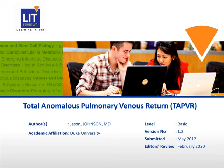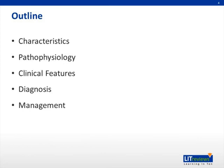I am Dr. Jason Johnson, one of the pediatric cardiology fellows at Duke University. This is a video annotated PowerPoint on total anomalous pulmonary venous return, or TAPVR. This presentation will go over the characteristics of TAPVR and the pathophysiology, including the clinical features. I will also discuss how the diagnosis of TAPVR is made and the management of these patients. We will focus on total anomalous pulmonary venous return as a form of congenital heart disease.